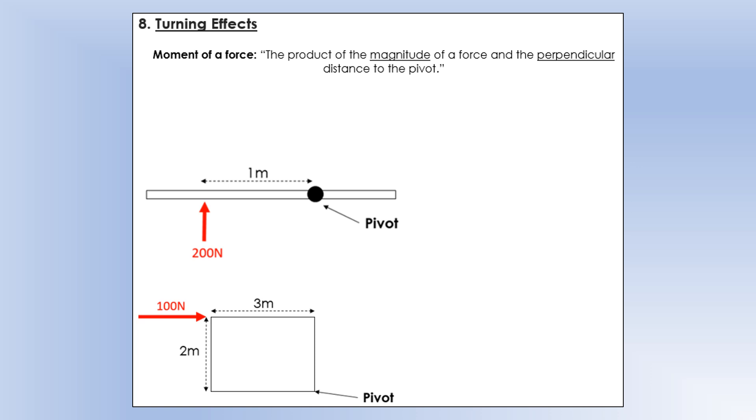Okay, so in the previous videos we've looked at how forces can change an object's speed or its velocity, how they can change its direction, and how they can change its shape. But there's actually one final thing that forces can do to an object. They can act to make it rotate.